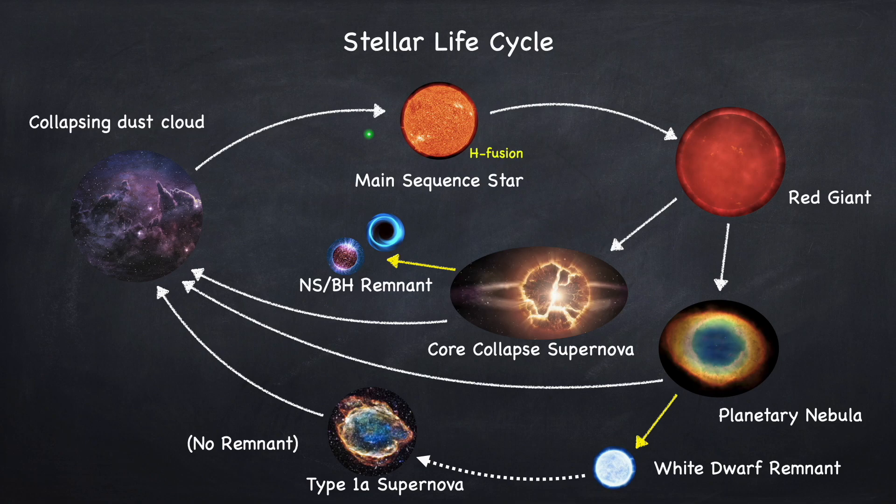This is called the main sequence. This is most of the stellar life cycle. Once the core runs out of hydrogen, it will move on to the next phase, which is helium fusion. This stage in the star is called a red giant.